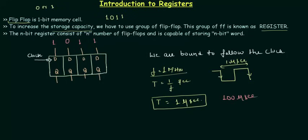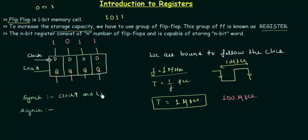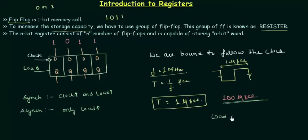We have to use some independent control, and we call this the load. Load is of two types: synchronous load and asynchronous load. For synchronous load, the flip-flop is operational when both the clock is high and the load is high. For asynchronous load, only the load being high is needed to change the stored value. This load is the independent control in our hands — when we make load high, the data will change regardless of the clock.